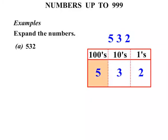We have five in the hundreds column. That's worth five hundred. The three is in the tens column. So three lots of ten is thirty. So we write plus thirty. And finally the two is in the ones or units column. Two lots of one is simply two. So we just write plus two on the end.